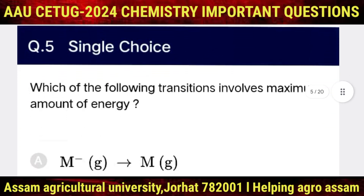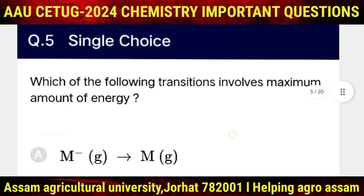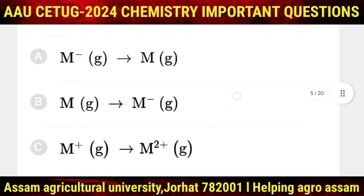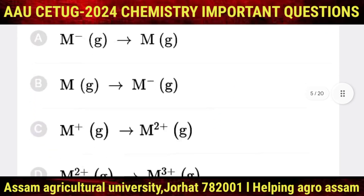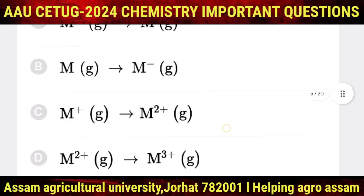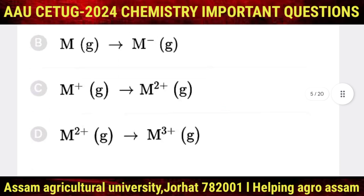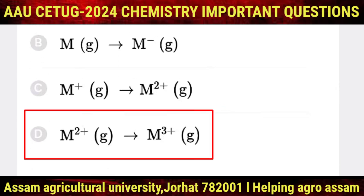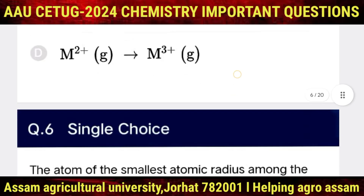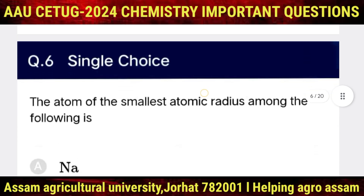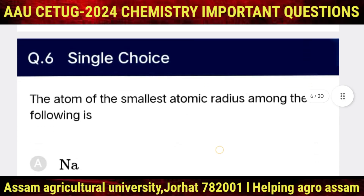Question number 5: which of the following transitions involves the maximum amount of energy? The options are M- to M, M to M+, M+ to M2+, and M2+ to M3+. The correct option is D, that is M2+ to M3+.